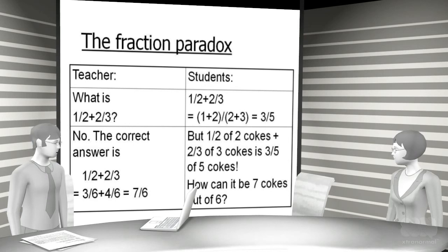The class answers that one over two plus two over three is one plus two over two plus three, which is three over five. The teacher then says, no. The correct answer is one over two plus two over three is the same as three over six plus four over six, which is seven over six. To this the class asks, but one over two of two cokes plus two over three of three cokes is three over five of five cokes. How can it be seven cokes out of six? The point is that all numbers have units and you can only add if the units are the same. Two over three does not exist in itself. It will always be two over three of something, as demonstrated by the recount formula.